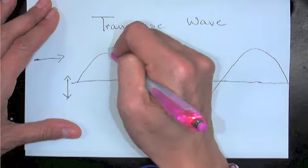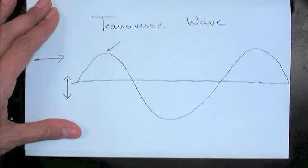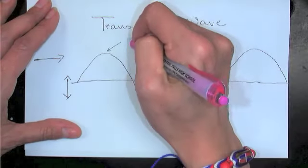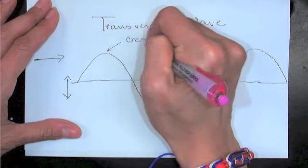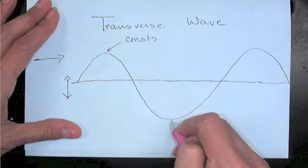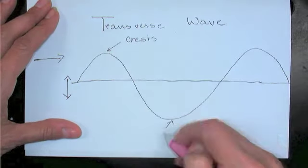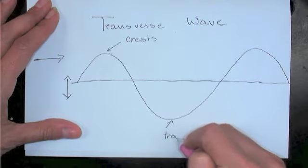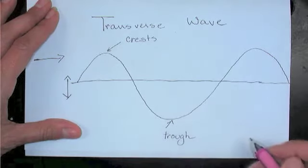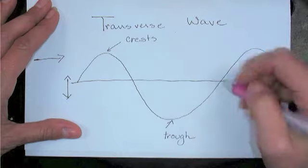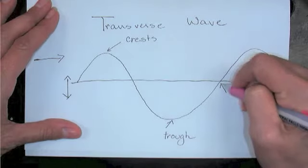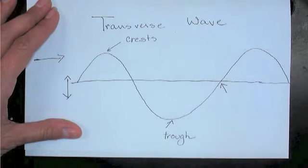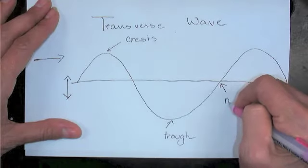The points that stick up are the crests, the parts that go down are the troughs. Think of animals eating out of a trough. The points that cross our midline are called nodes.